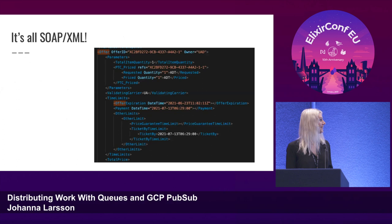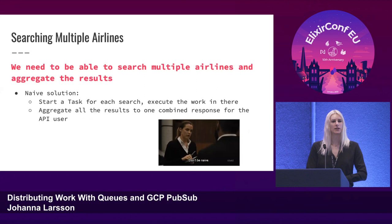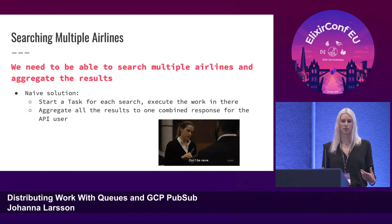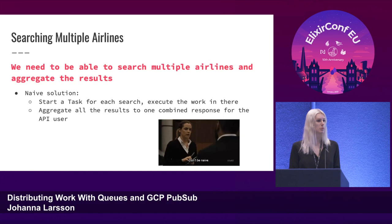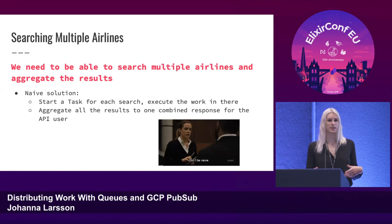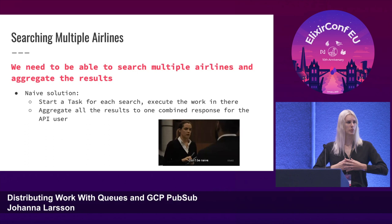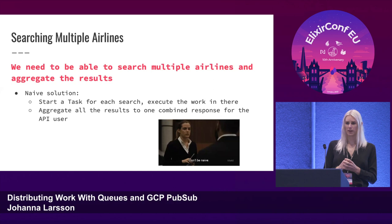Not only do we need to search one airline — we need to be able to search multiple airlines, because an end user who wants to search for a flight doesn't necessarily care which airline is operating that plane. They just care about getting from one point to another. In Elixir, we do concurrency by having multiple processes. A naive solution is to start a task that executes an HTTP request to the airline, fan out to hit all airlines with a bunch of tasks, gather all the results back, aggregate them, and pass them on to the user.